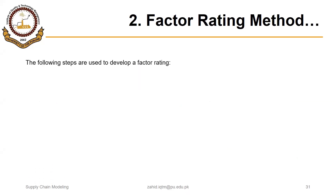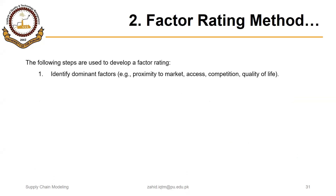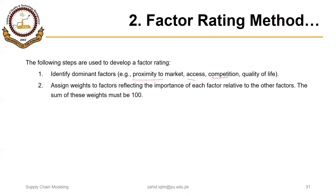Factor rating is valuable because it helps decision makers structure their opinions relative to the factors identified as important. These are the steps to follow: First, identify dominant factors that are relevant in a certain case to decide the location of the facility. If you have too many factors you may need to shortlist the most important, like proximity to market, access, competition, or whatever is relevant. Second, assign weights to factors reflecting the importance of each factor relative to the others.